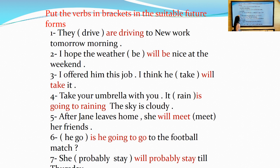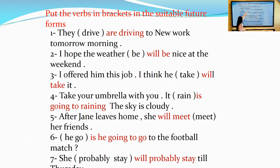The second one: I hope the weather will be nice at the weekend. I don't have any evidence. If we have evidence, I will use going to. But in this sentence, I don't have any evidence, I will use will. The third one: I offered him this job, I think he will take it. I think - I'm not sure, so I will use will because it's a prediction.